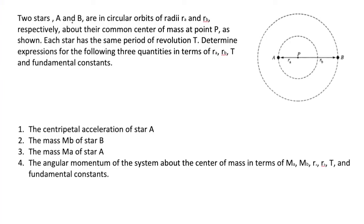Two stars, A and B, are in circular orbits of radii RA and RB, respectively, about their common center of mass at point P, as shown. Each star has the same period of revolution T. Determine expressions for the following three quantities in terms of RA, RB, T, and fundamental constants.